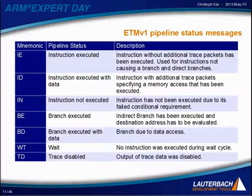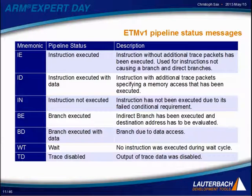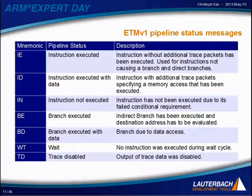The most important signal for code coverage purposes is the pipeline status flags. We have several flags — basically instructions and branches are distinguished. We have flags for instructions without data and with data, and the same applies for branches. The branch flag stands for indirect branches, which are branches that use as target address the value provided by a CPU register — that's why they are called indirect branches.